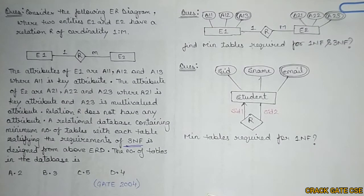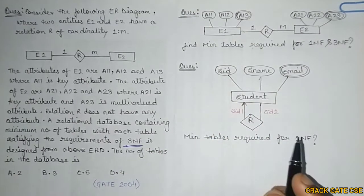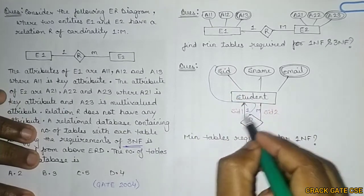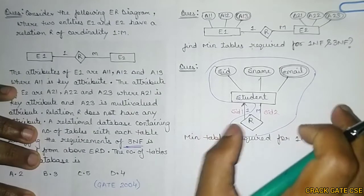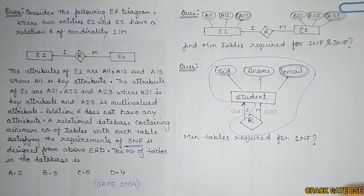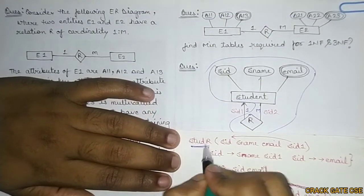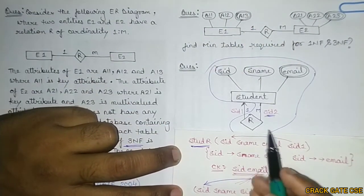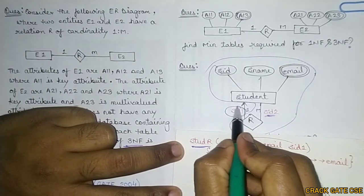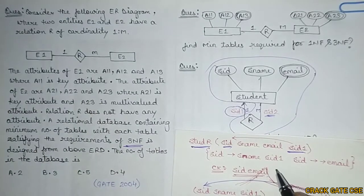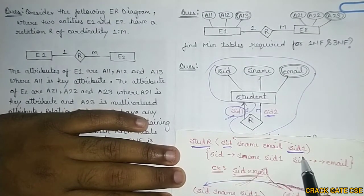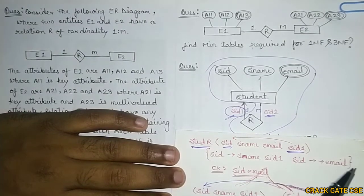Now let's see one more question involving a self-referential entity set or self-referential relationship set. In this case, for a 1-to-many relationship, we can merge R into a table. The merged table student-R will have attributes: S_id, S_name, email, and S_id2 (the self-referential foreign attribute corresponding to the other side of the relationship).